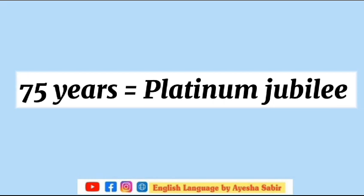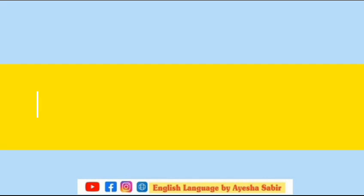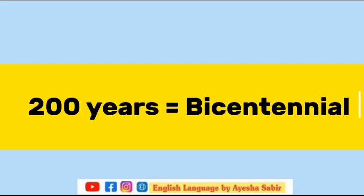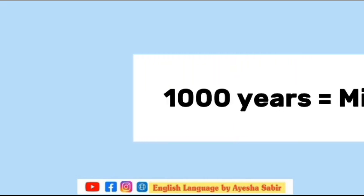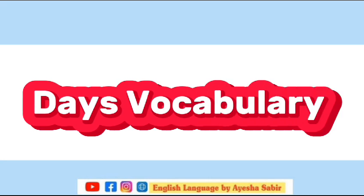100 years equal to century. 200 years equal to bicentennial. 300 years equal to tercentennial. 1000 years equal to millennium. Dear viewers, this video regarding the days vocabulary will be quite informative for you. For more informative videos, keep watching my channel. Allah hafiz.